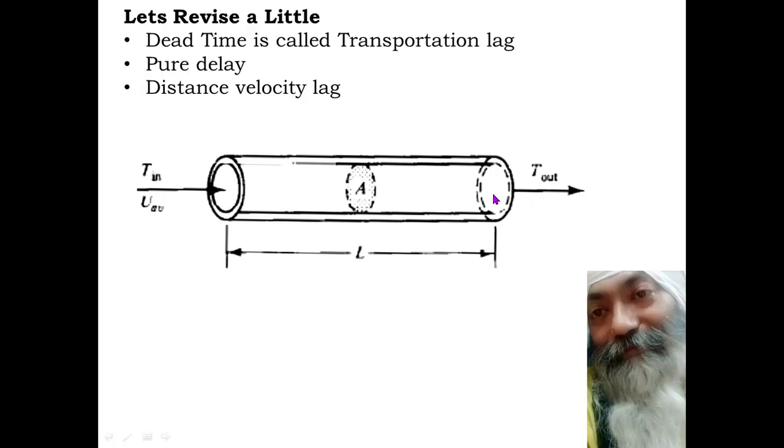Now let us see how much will this distance time lag be there. It depends upon the volume of the pipe divided by the volumetric flow rate, and as you can see over here, this comes out to be nothing but the length of the tube divided by the velocity, average velocity of the flow happening over this period.